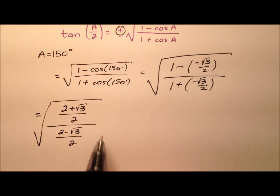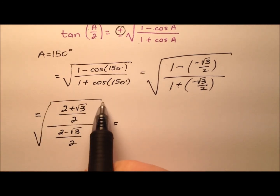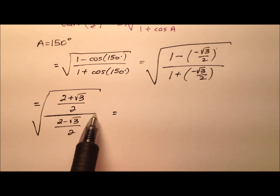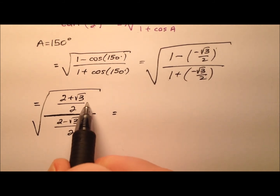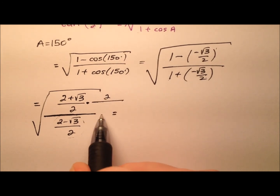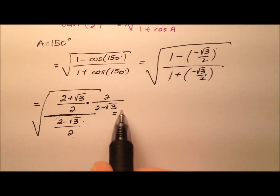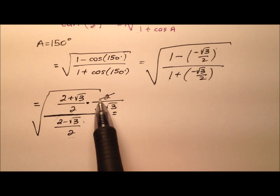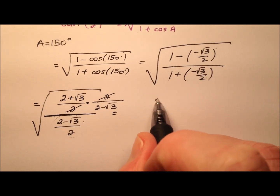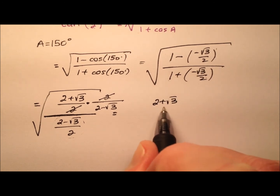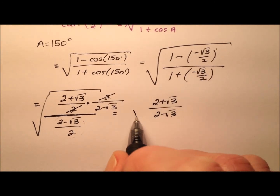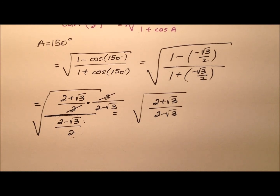All of that is under the radical. When dividing fractions, we multiply by the reciprocal, so flip the bottom fraction. The 2s cancel out nicely, leaving 2 plus radical 3 over 2 minus radical 3, all under that radical.